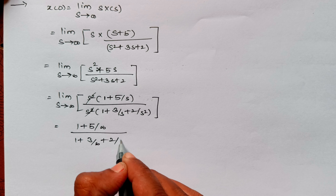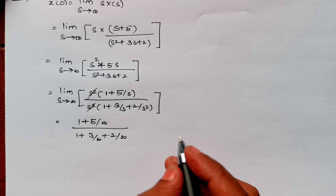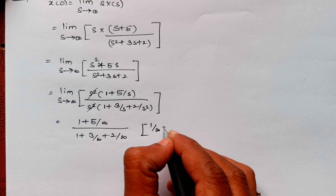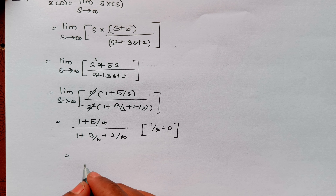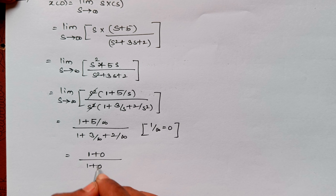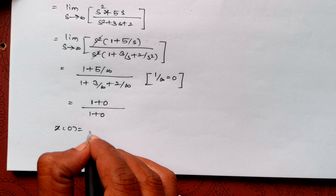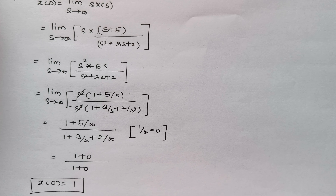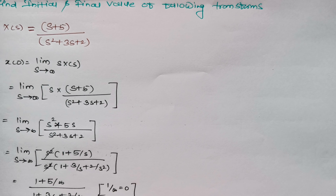The s² cancels out. Now applying the limit as s tends to infinity: anything divided by infinity is 0. So we get (1 + 0) / (1 + 0), which means the initial value x(0) is equal to 1.